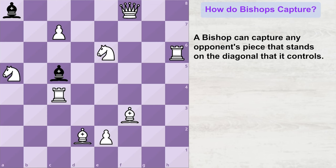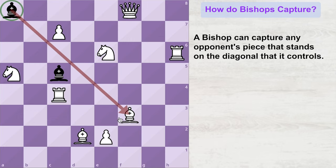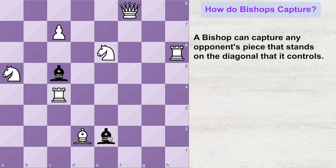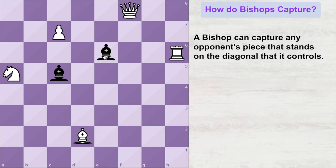Now let's see how a bishop captures other pieces in the game. If a bishop sees any opponent's piece on any of the diagonals it controls, it has the option of capturing that piece. For example, this light squared bishop can capture the opponent's bishop on f3, then in the next move capture a pawn, then capture a rook, then capture a knight. This way the light squared bishop captured all opponent's pieces that came on its way while traveling on the light squared diagonals.